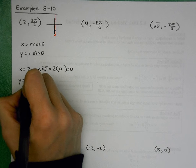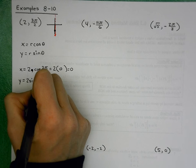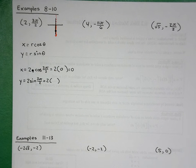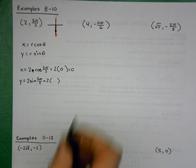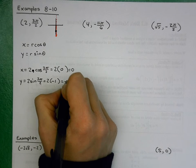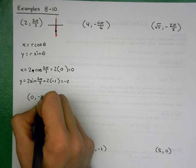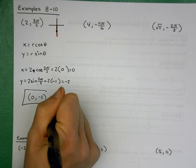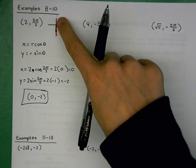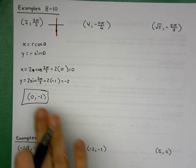Now y = r·sin θ = 2·sin(3π/2). The sine of 3π/2 is negative 1, so y = negative 2. My coordinate point is (0, −2). Taking a quick look at my sketch — does that make sense? 0, −2 sits me on the lower y-axis, so yes, my conversion makes sense.